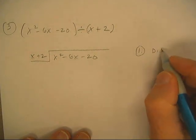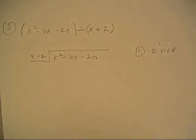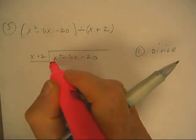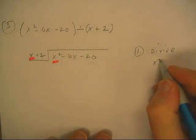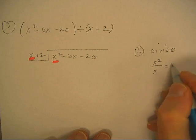When we get ready to divide, we want to do the first term divided by the first term only. So we do x squared divided by x and we get x, and then it goes right there.